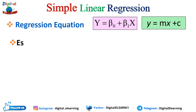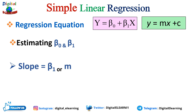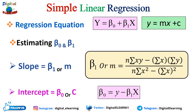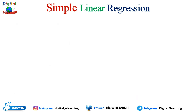The regression equation is y = b₀ + b₁x, also written as y = mx + c — both are the same equation. We need to estimate b₀ and b₁. b₀ is the y-intercept, the value at which the regression line crosses the vertical axis when x equals zero. b₁ is the slope of the regression line. The slope b₁ or m is calculated as: (n·Σxy − Σx·Σy) / (n·Σx² − (Σx)²). The intercept b₀ or c is calculated as: ȳ − b₁·x̄.